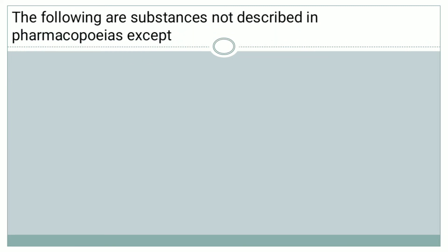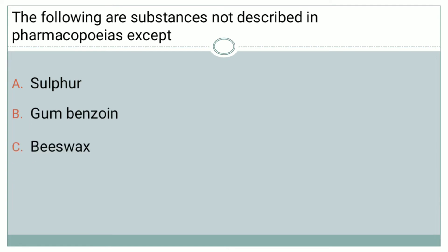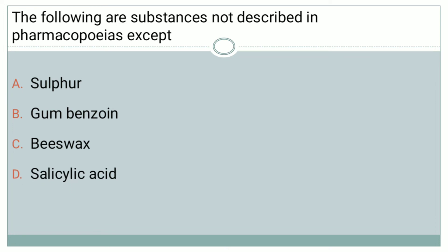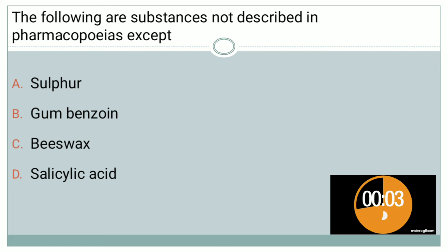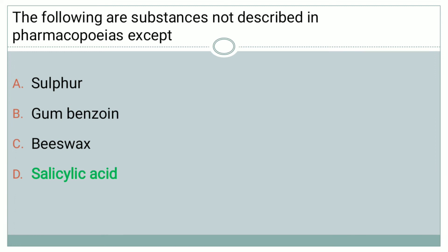The next question: The following are substances not described in Pharmacopeias except — Option A: Sulphur, Option B: Gum Benzoin, Option C: Beeswax, Option D: Salicylic Acid. The right answer is Option D, that is Salicylic Acid. The rest of the substances are not described.